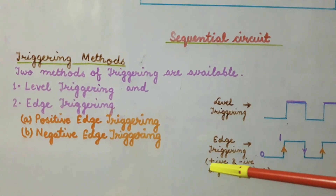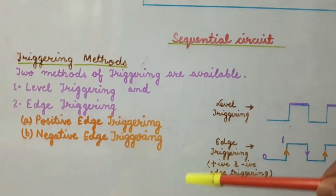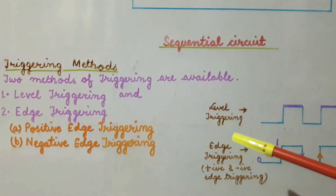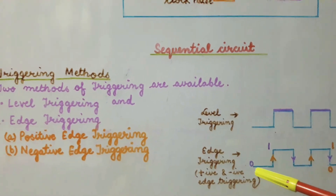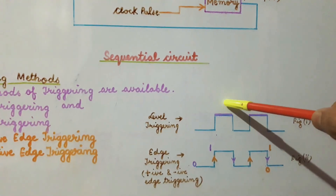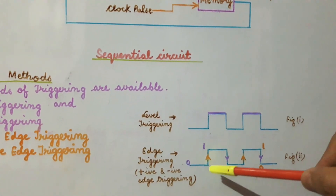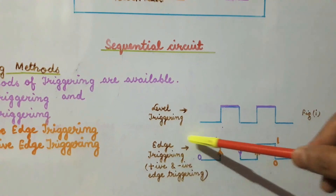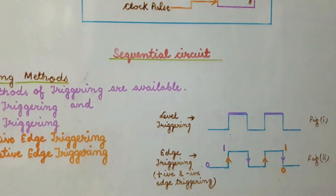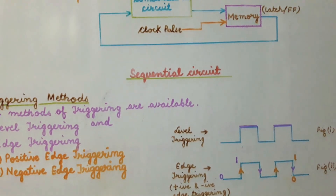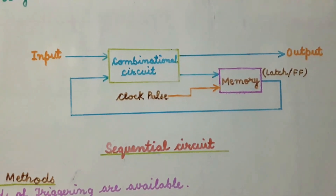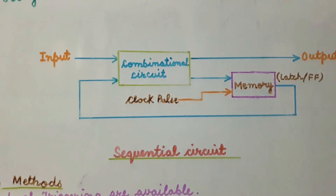It is very important to understand these simple things in order to study our flip-flops. Figure 1 represents level triggering, and figure 2 represents positive edge triggering and negative edge triggering. Hope the triggering and the triggering methods are clear to all of you. See you in the next presentation.